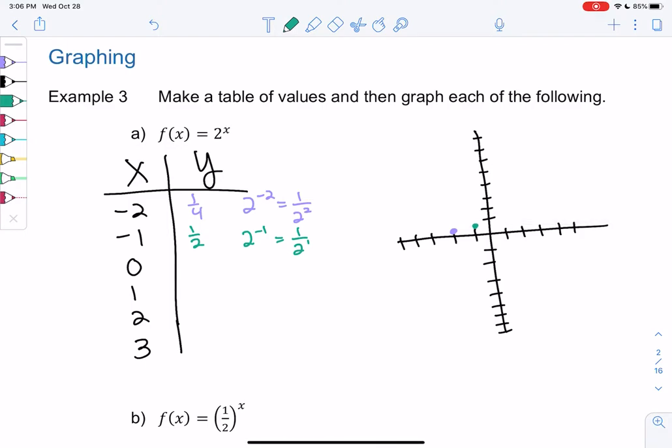So negative 1, and then we go up to 1 half. I don't really know the shape yet. Let's get a couple more. 2 to the 0, 0 powers are 1. So we get 0 and 1. So we just go up to 1. This is not a line, so don't graph it yet.